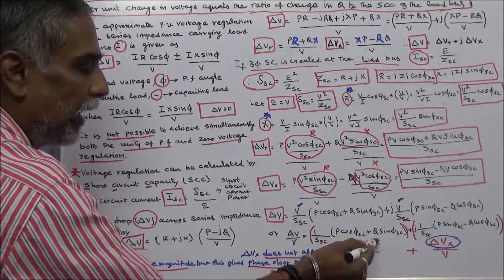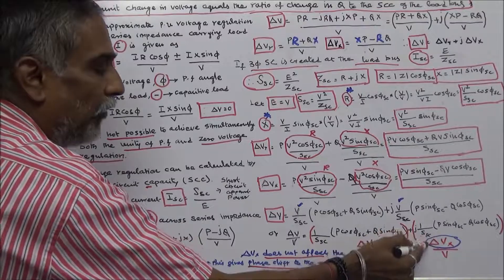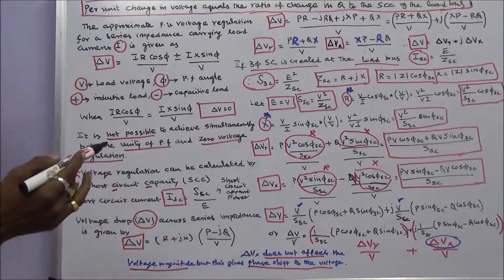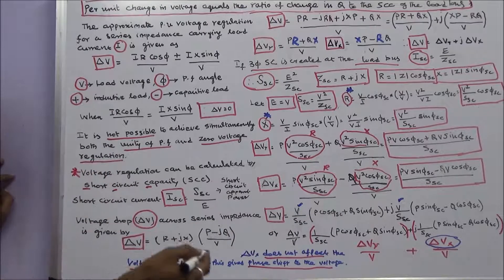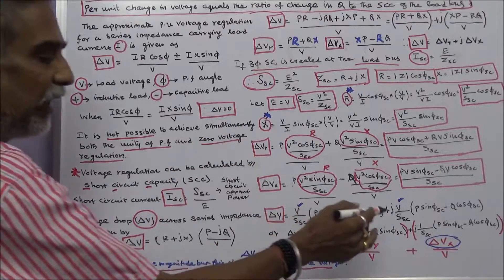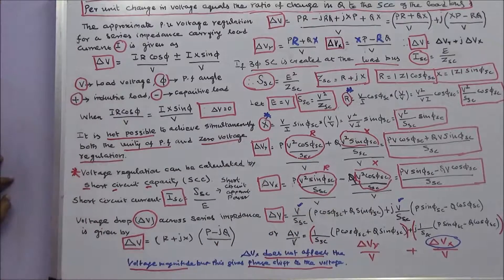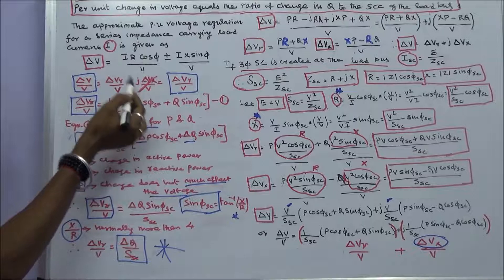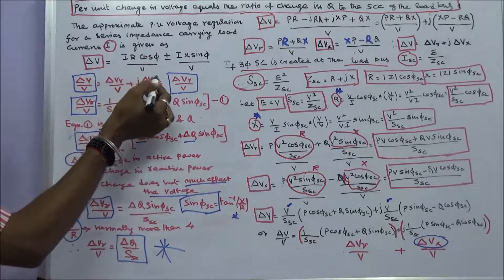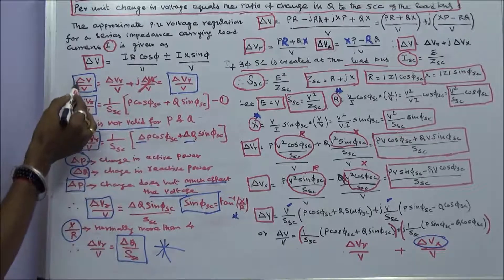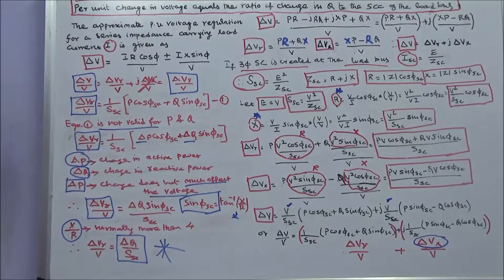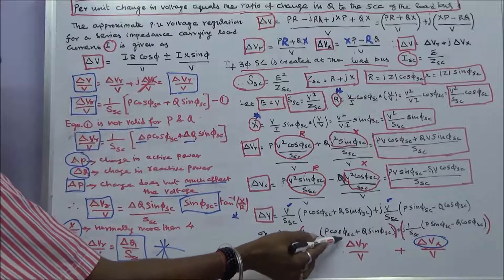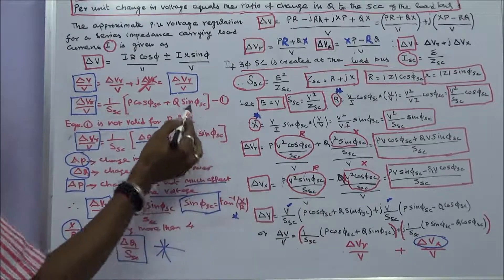We can write delta V / V equals delta V_R / V plus j·delta V_X / V. The imaginary component delta V_X does not affect the voltage magnitude — it only causes a phase shift in the voltage. Hence, we neglect it. Therefore, delta V / V equals delta V_R / V, which equals 1 divided by S_SC times [P·cos(φ_SC) plus Q·sin(φ_SC)]. This is Equation 1.